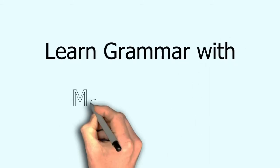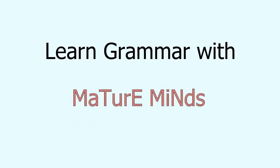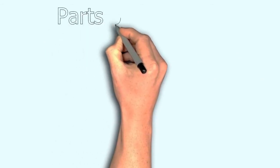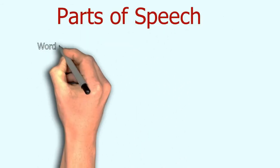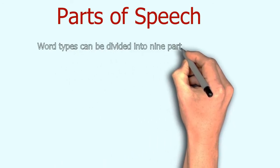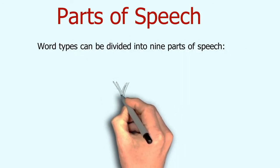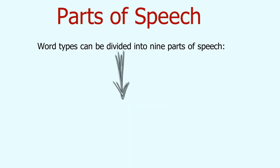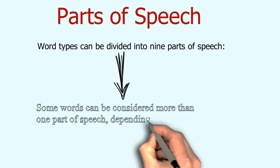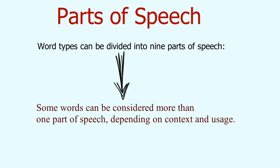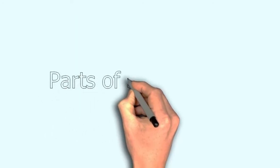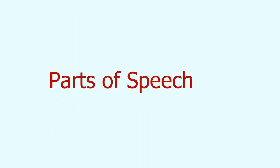Assalamualaikum to all of you, this is Mature Minds. Today we will discuss parts of speech. Parts of speech are basically words which we can divide into 9 types. There are 9 parts of speech, and a word can be a different part of speech at a time depending on how it is functioning in a sentence — it can act as 2 different parts of speech.